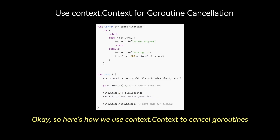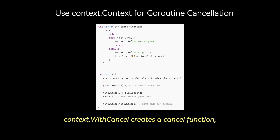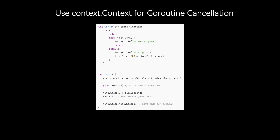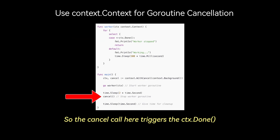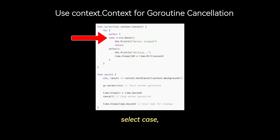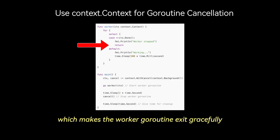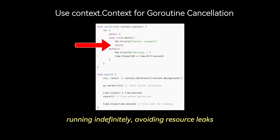Here's how we use context.Context to cancel goroutines: context.WithCancel creates a cancel function. Inside the worker goroutine, select listens for context.Done, which signals cancellation. The cancel call triggers the context.Done select case, which makes the worker goroutine exit gracefully, preventing goroutines from running indefinitely and avoiding resource leaks.